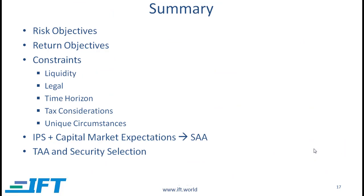In summary, you need to understand risk objectives, which are defined either quantitatively or qualitatively. Qualitatively, risk tolerance is described as high, medium, or low. Both the willingness and the ability to take risk should be considered: ability is based on objective factors such as income and wealth, while willingness depends on psychological factors and circumstances. The combination of the two helps define the overall risk objective for the client.